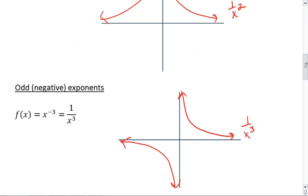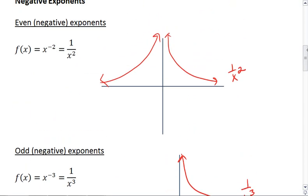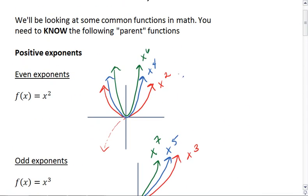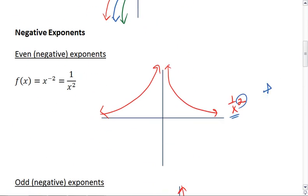And we'll talk about why that is in class. But in general, the reason that that happens is because if we have a value to an even exponent, you already know that no matter what value x is, that will make the answer positive. And that's why with x squared, or 1 over x squared, we see that the graph only exists where y is positive.